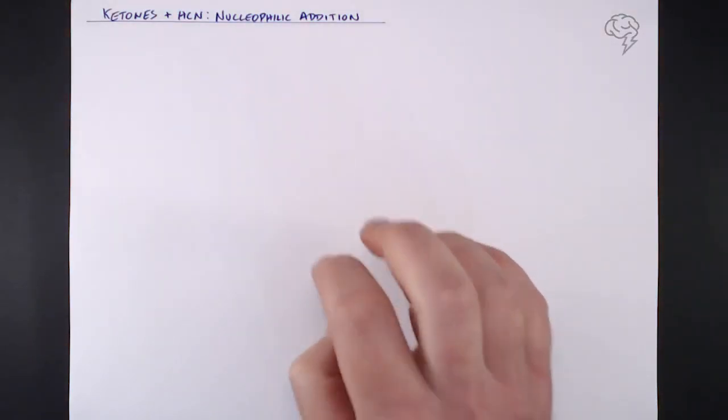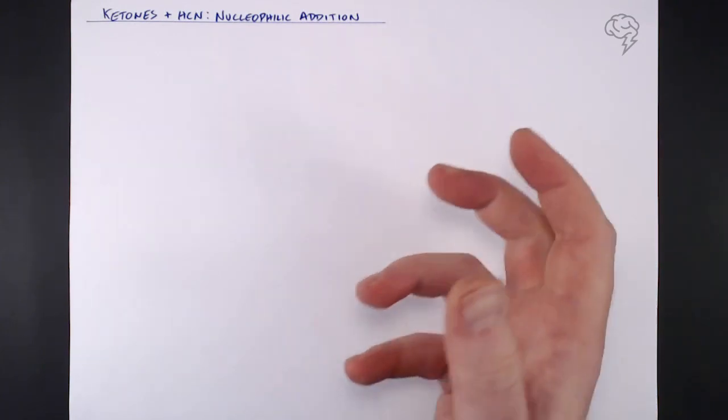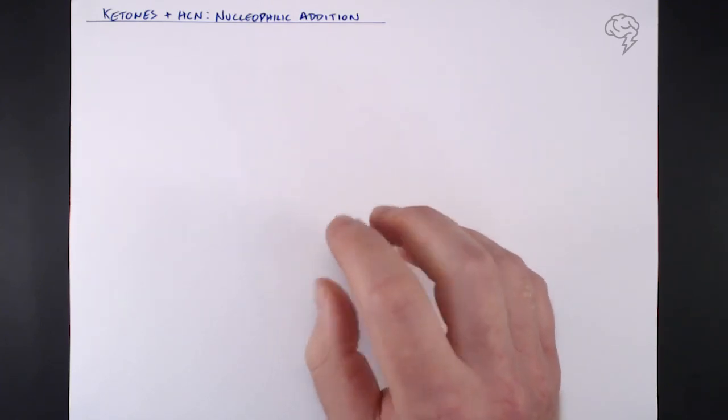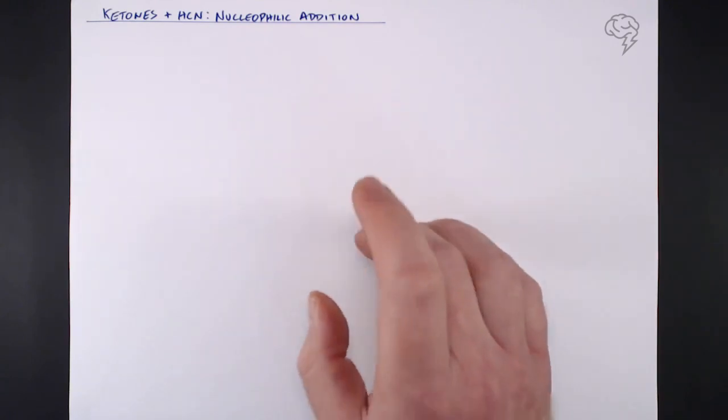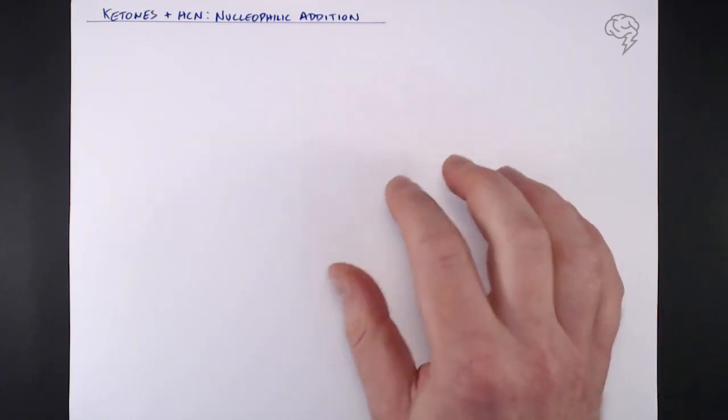In this tutorial we're looking at ketones and their reaction with hydrogen cyanide. This is nucleophilic addition, just like with aldehydes. It's the same reagent and mechanism, but the product is slightly different, so I'm treating this separately in a different tutorial.